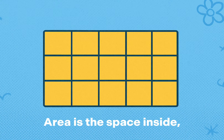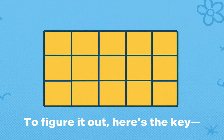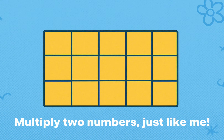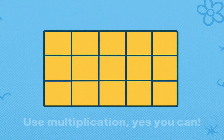Area is the space inside, like a blanket, big and wide. To figure it out, here's the key: multiply two numbers, just like me. Length times width, that's the plan. Use multiplication, yes you can.